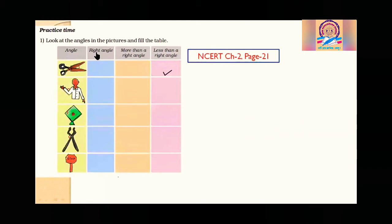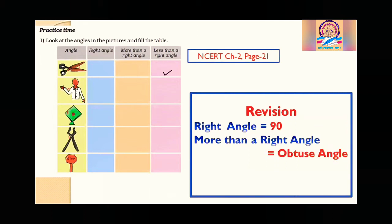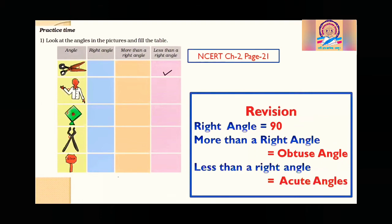First, let us revise. A right angle is equal to exactly 90 degrees. More than a right angle is called an obtuse angle — more than 90 degrees. Less than a right angle is called an acute angle.